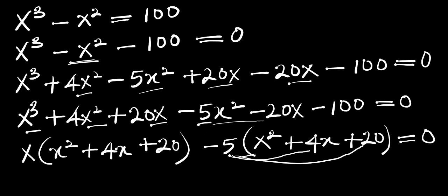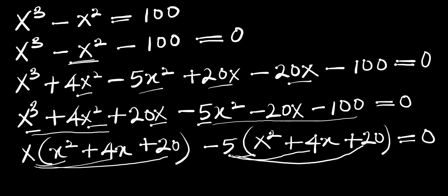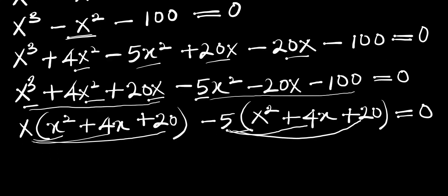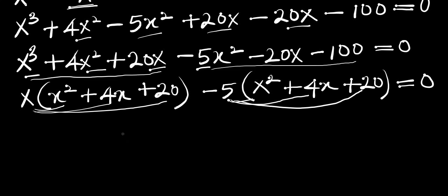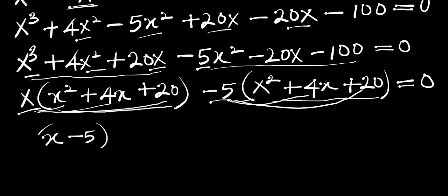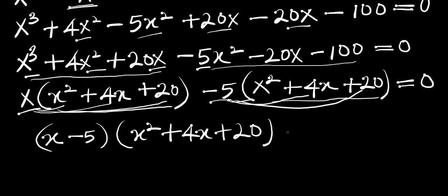If you multiply this out, you get this part of the equation back, and the same thing here — if you multiply this out you get this back. Since what we have inside the bracket and what we have here are the same, we combine x and negative 5 to get x minus 5, and we have x² plus 4x plus 20, and this equals 0.